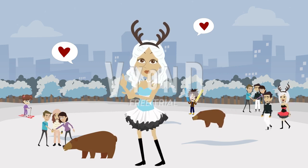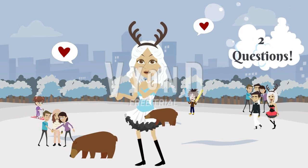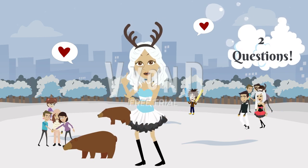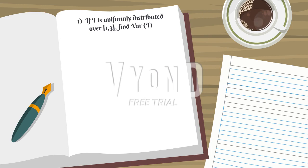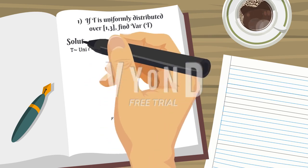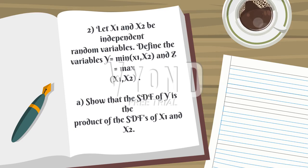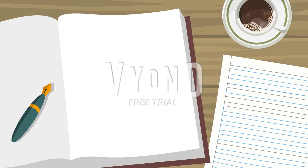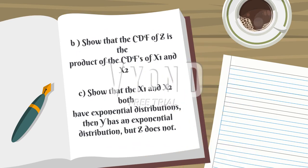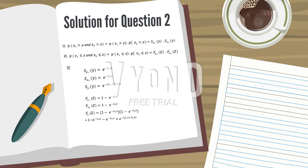Before I end my presentation, let's proceed with two questions from this section based on the properties already explained. First: if T is uniformly distributed over the interval 1 to 3, find the variance of T. This is the solution. Second question: let X1 and X2 be independent random variables. Define Y equals the minimum of X1 and X2, and Z equals the maximum of X1 and X2. (a) Show that the SDF of Y is the product of the SDF of X1 and X2. (b) Show that the CDF of Z is the product of the CDF of X1 and X2. (c) Show that if X1 and X2 both have exponential distributions, then Y has an exponential distribution but Z does not. This is the solution for the question.